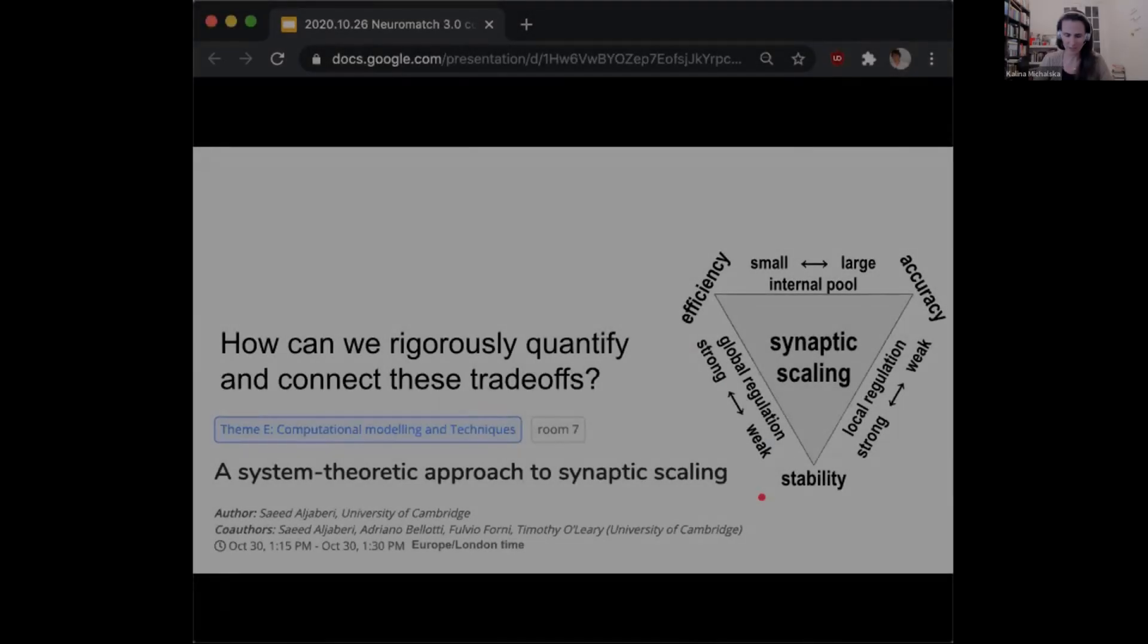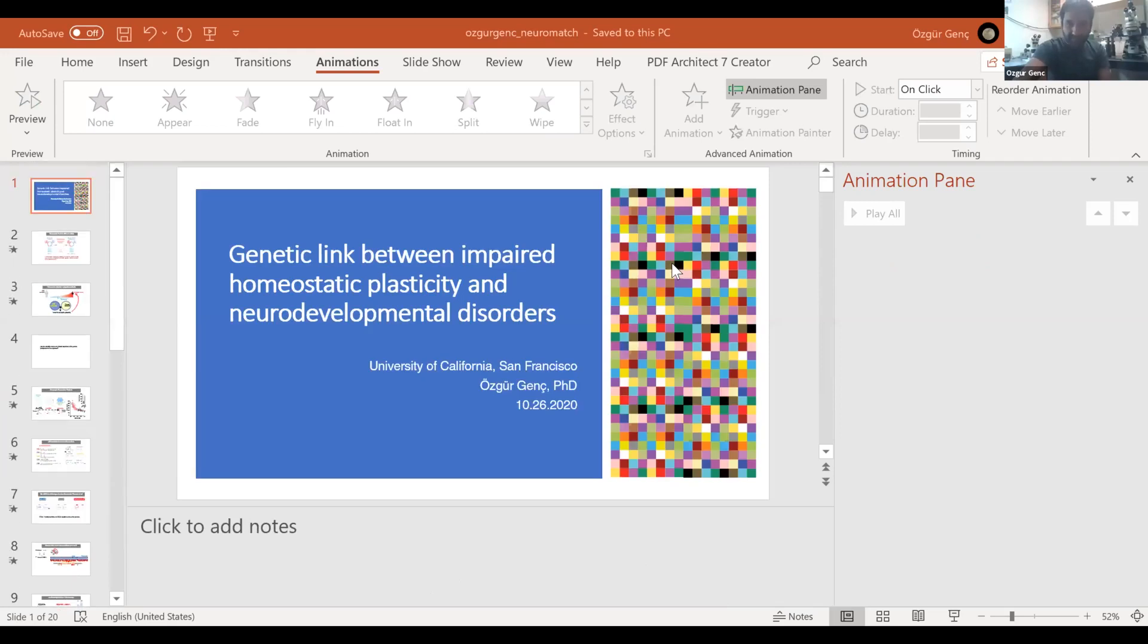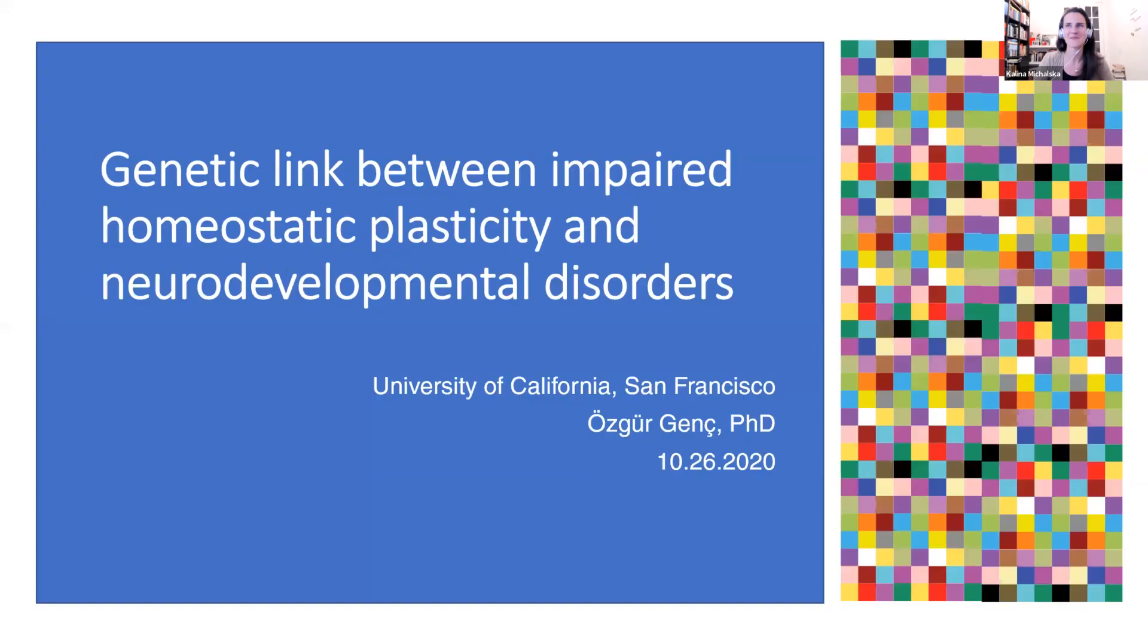We need to move on to the next speaker, Ozgur Genc. He is a postdoc at UCSF and he's going to share some of his exciting new work on the genetic link between impaired homeostatic plasticity and neurodevelopmental disorders. Thank you Kalina for sharing the session. Can you see my screen? Yes, perfect. Today I'm going to talk about the genetic links between impaired homeostatic plasticity and neurodevelopmental disorders.